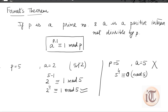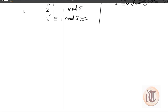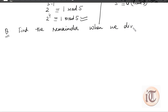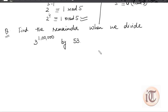Now for an application of Fermat's theorem: suppose the question asks to find the remainder when we divide 3 to the power 1,000,000 by 53. If the question is like this, then we can apply Fermat's theorem to solve this problem.